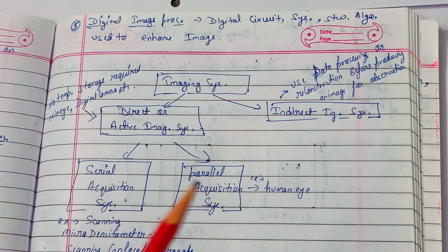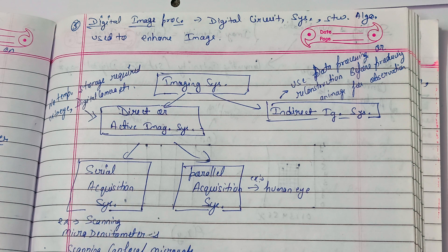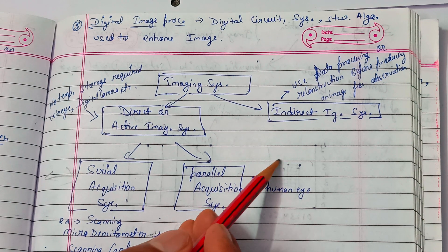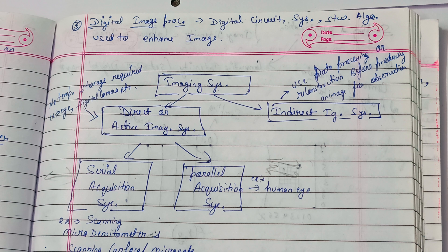In the direct or active image system, there are two subtypes: serial acquisition system and parallel acquisition system. The serial acquisition system uses a scanning microscope and has been applied in fields like scanning densitometers and scanning confocal microscopes — particularly in the medical field. The parallel acquisition system is applied in human vision. Serial means a single path is working, while in parallel, two processes go on simultaneously. The human eye is the best example of a parallel acquisition system.